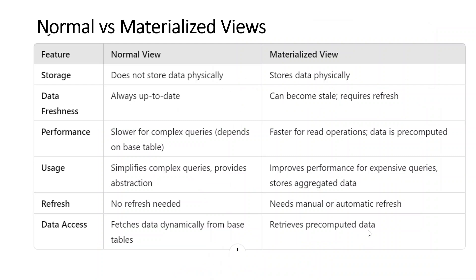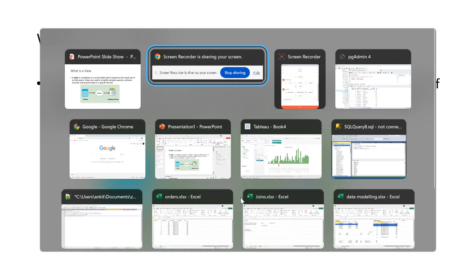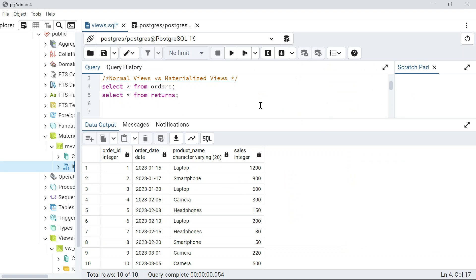In general, a view in a database is a virtual table that is based on the result set of an SQL query. Views are used to simplify complex queries, enhance security, and present data in a specific format. I am using pgAdmin PostgreSQL to explain this, because materialized views are not directly available in SQL Server — there we have index views, which are a bit different.